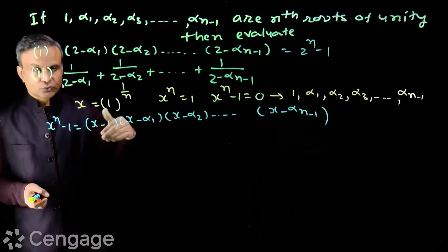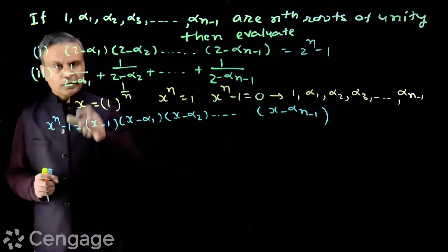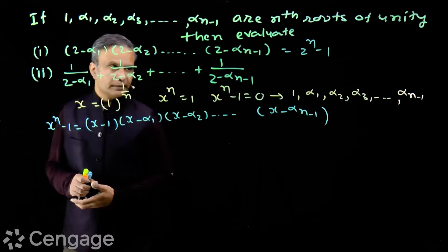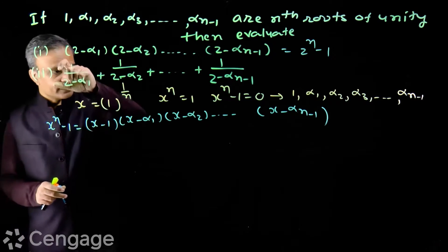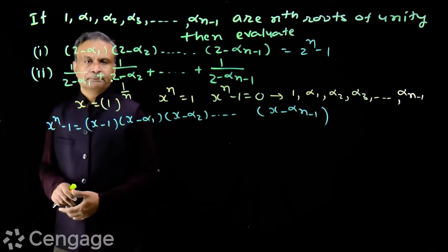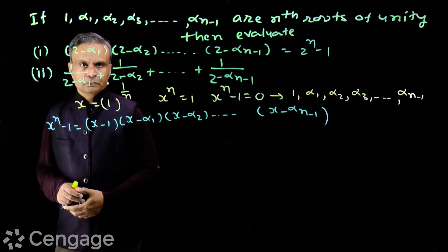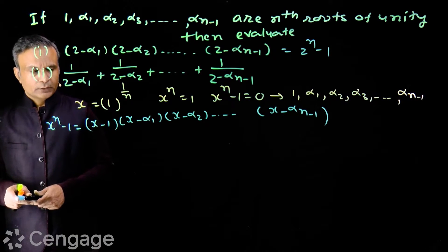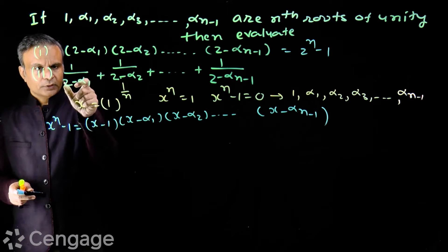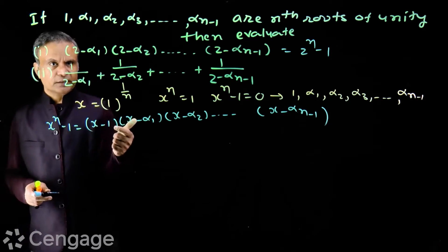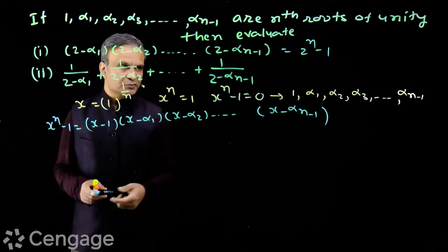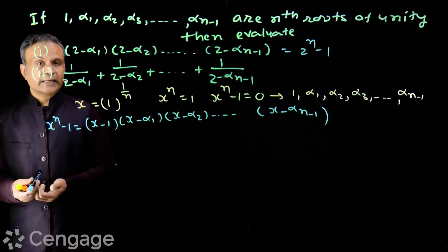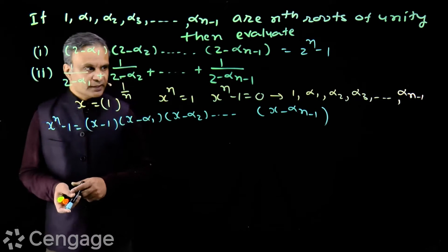Now for the second expression — 1/(2 - α₁) + 1/(2 - α₂) + ... + 1/(2 - αₙ₋₁) — we get these terms using logarithm and differentiation.